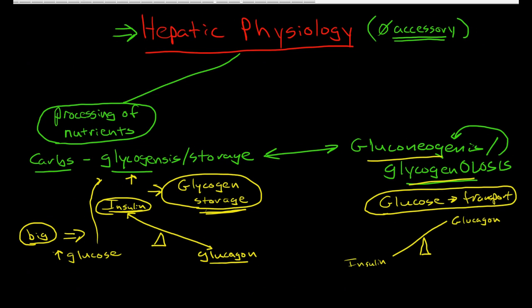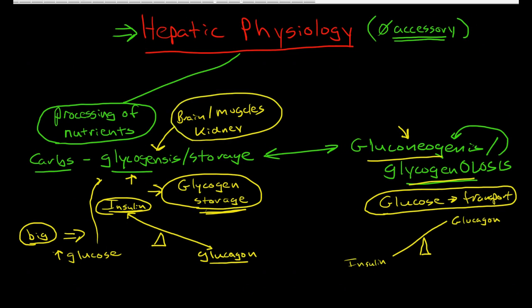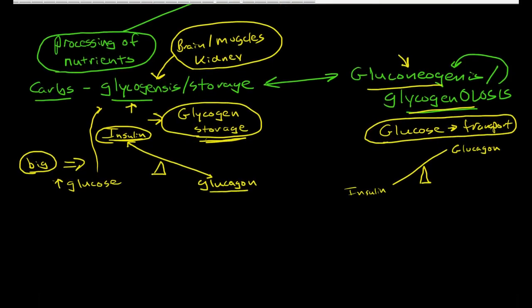The liver is not the only place in the body that can engage in glycogenesis or gluconeogenesis — this can also occur in the brain, muscles, and some other tissues. The kidney is also a very important organ involved. The other two big nutrient groups are obviously proteins and lipids.